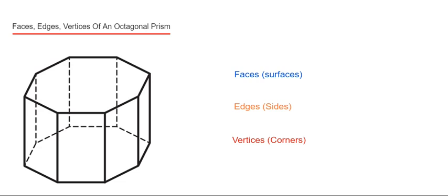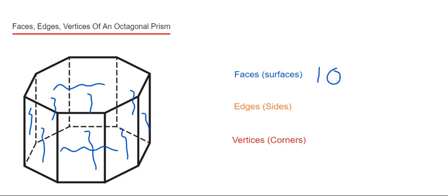So let's do the faces first of all. These are the same as the surfaces which make the 3D shape. So we have one at the top and one at the bottom — that's two. And then we've got eight around the middle: three, four, five, six, seven, eight, nine, ten. So we have ten faces.